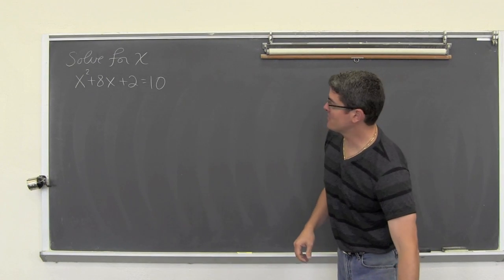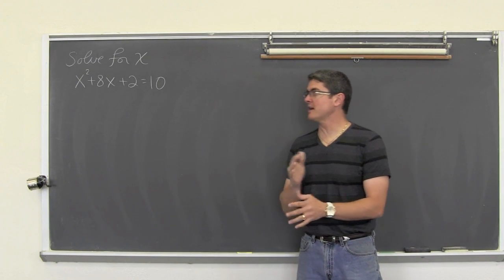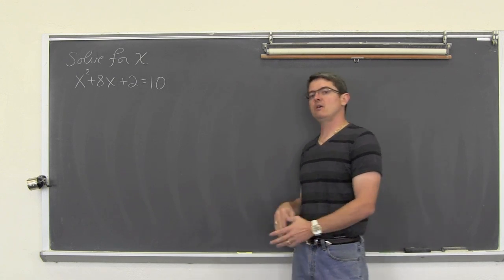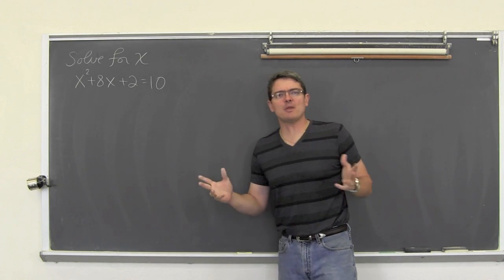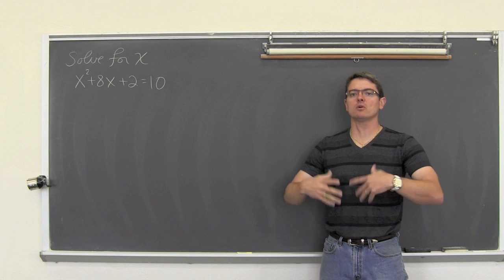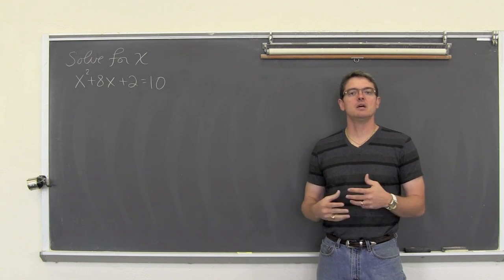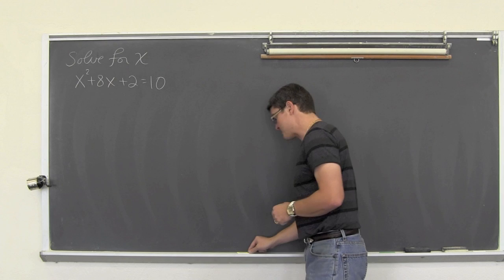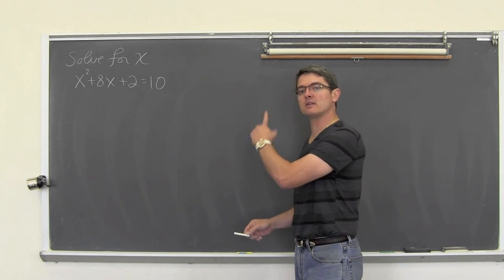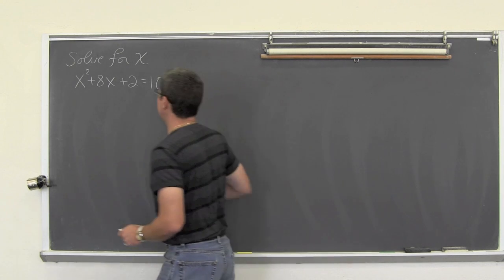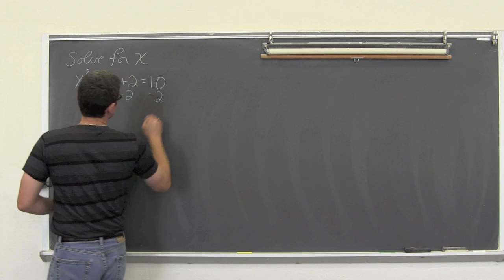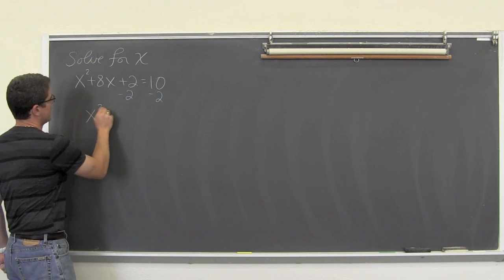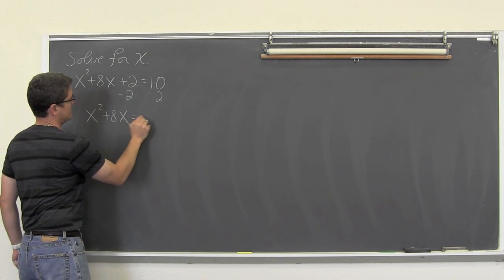Next example: solve x² + 8x + 2 = 10. We are going to follow the steps: get the x terms alone and the constant on the right. Subtracting 2 from both sides gives us x² + 8x = 8.